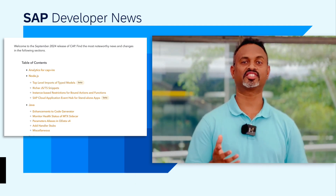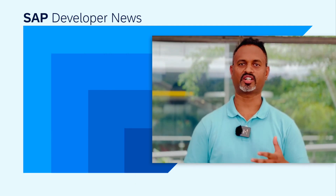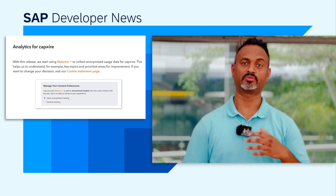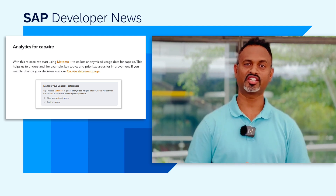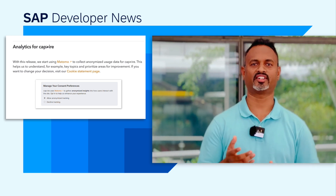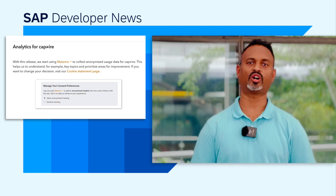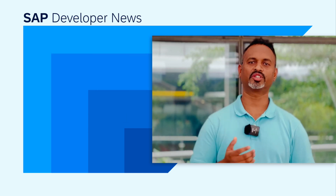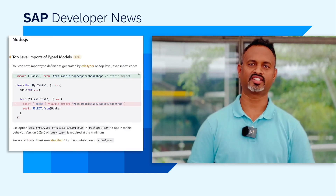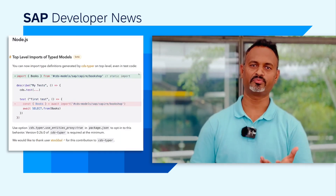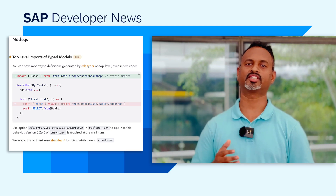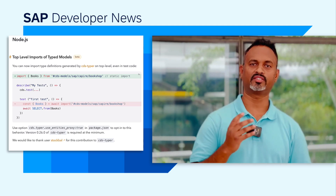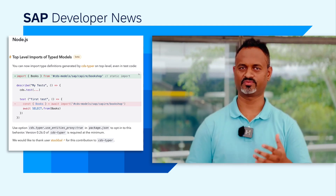The first update is about analytics for Capaya. Matomo is used to collect anonymized usage data for Capaya, and users will have the option to disable the tracking. Coming to the Node.js updates, you can now import type definitions generated by the CDS typer on the top-level code, even in the test code.